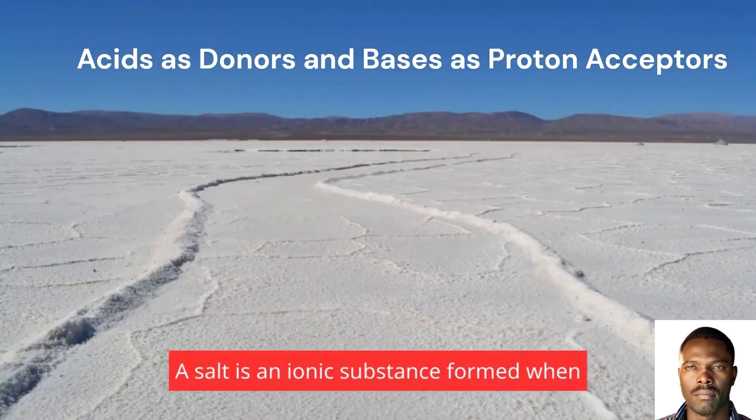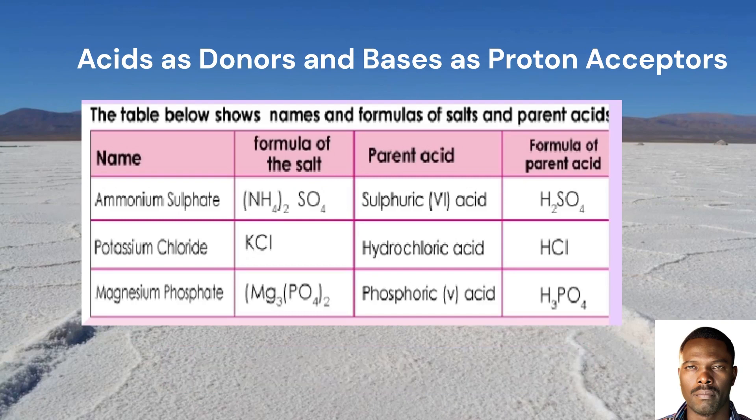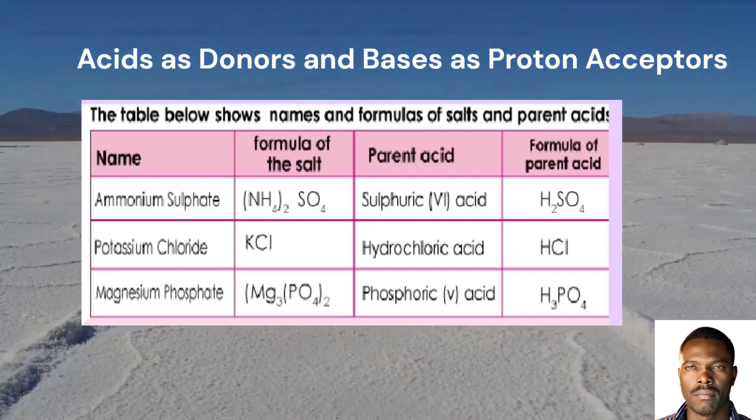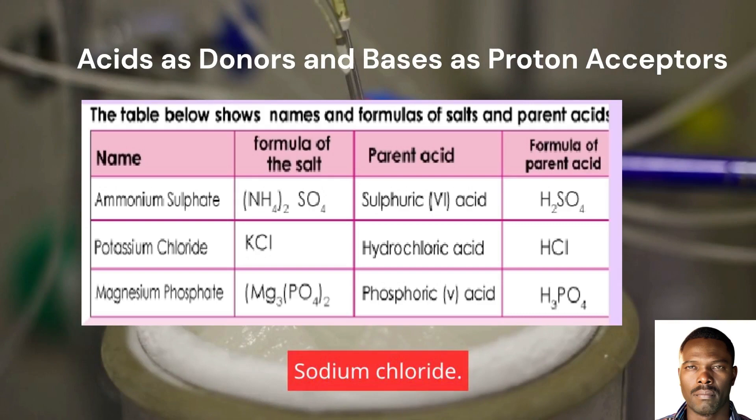A salt is an ionic substance formed when a cation from a base combines with an anion from an acid. Sodium ions from the base combine with chloride ions to form the salt sodium chloride.